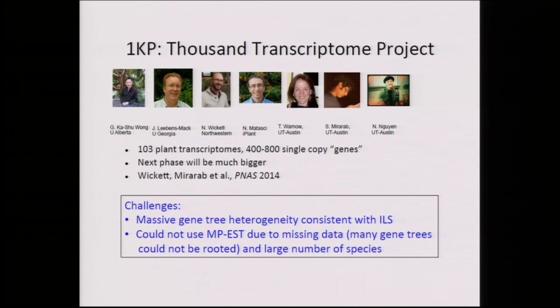The plant project was a different analysis — published before but done after the bird analysis — again with massive gene tree heterogeneity. We wanted to use MP-EST but could not because we had too many taxa; MP-EST doesn't really run on large data sets. More importantly, we had many genes lacking outgroups and therefore couldn't root our gene trees, so we couldn't use MP-EST which requires rooted gene trees. The solution: we developed a new method called ASTRAL, which works with unrooted gene trees.